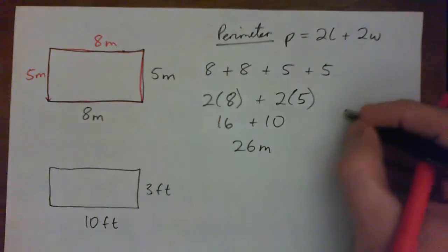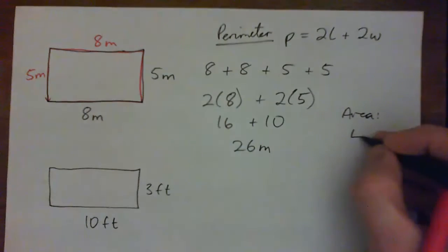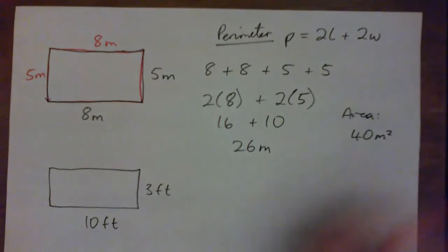And again, the area, by the way, would be where you multiply them. You go 5 times 8 is 40 square meters, meters squared.